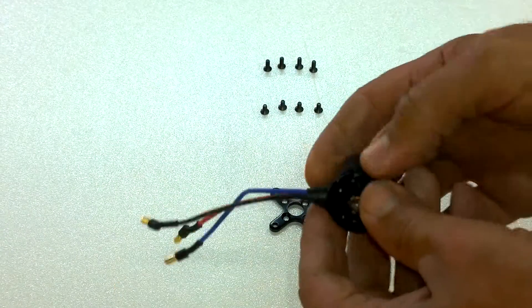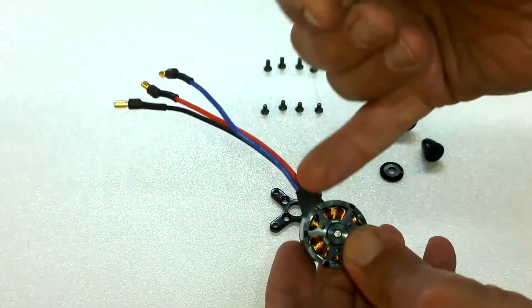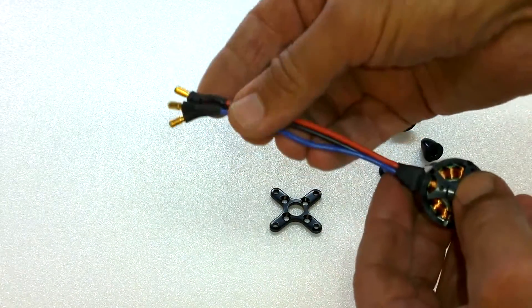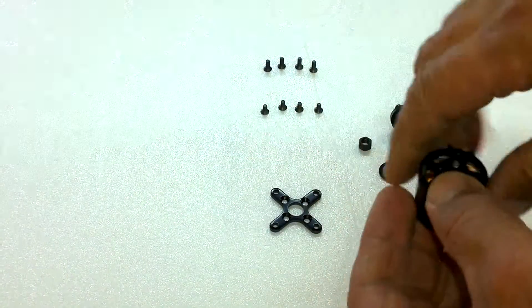The SunnySky doesn't have that. It has good quality leads, and it's joined in here, and quite a good length. It comes complete with the bullet connectors as well. So they don't always come with that.